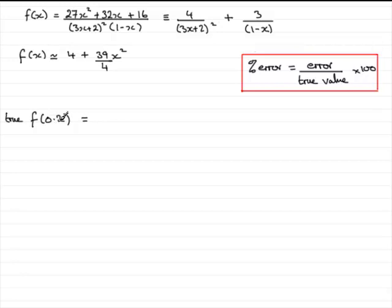What you need to do is substitute 0.2 into either this equation here or we saw earlier that it was identical to these two partial fractions. Either way, if you substitute x as 0.2 into here, you'll find that you should get a value of 4.3417159 and so on.